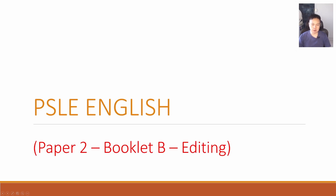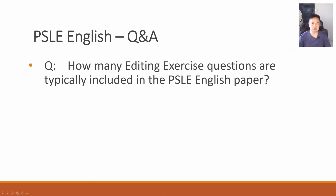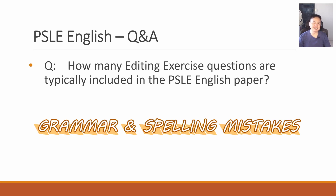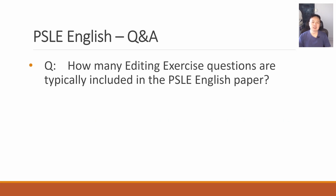Now let's talk about Booklet B editing. How many editing exercise questions are included in the PSLE English paper? Twelve — the editing exercise is worth 12 marks. There are usually six grammar mistakes and around six spelling mistakes. For grammar mistakes, the spelling is correct — there's something grammatically wrong. For spelling, the word given to you is 100% the wrong spelling. Most of the time they try to come up with a similar-sounding word close to the correct answer so that you can make an accurate guess.